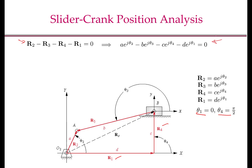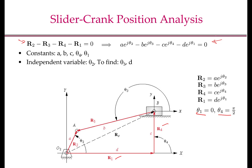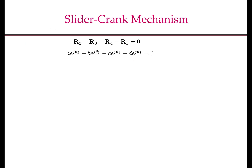Before proceeding further, let us identify all the constants, unknown variables, and independent variables. The constants are the link lengths A and B, the offset C, and the angles theta 4 and theta 1. The independent variable is the crank angle theta 2. The unknown variables to be found are the angle theta 3 and the displacement of the slider D.